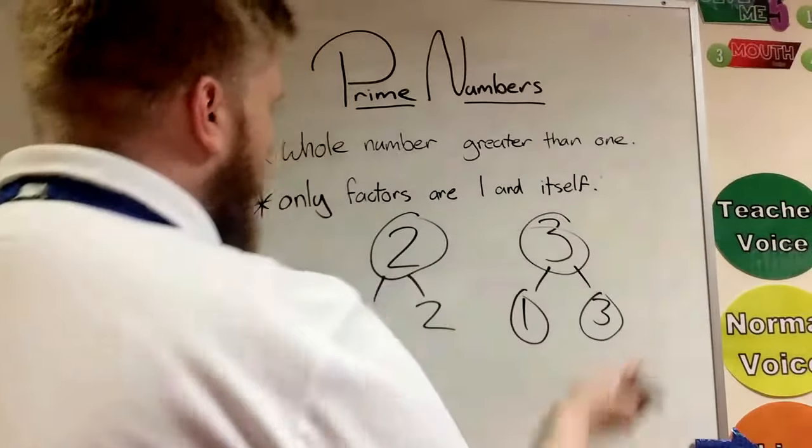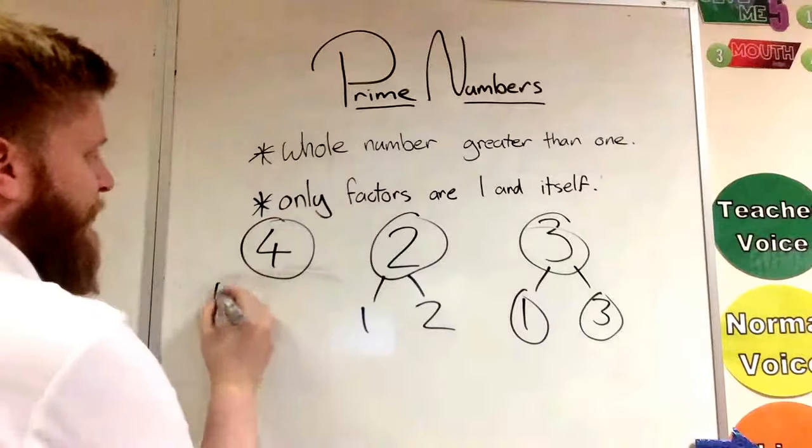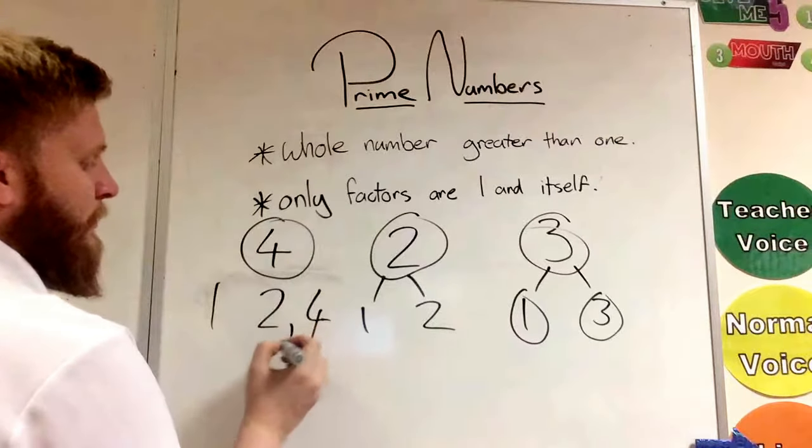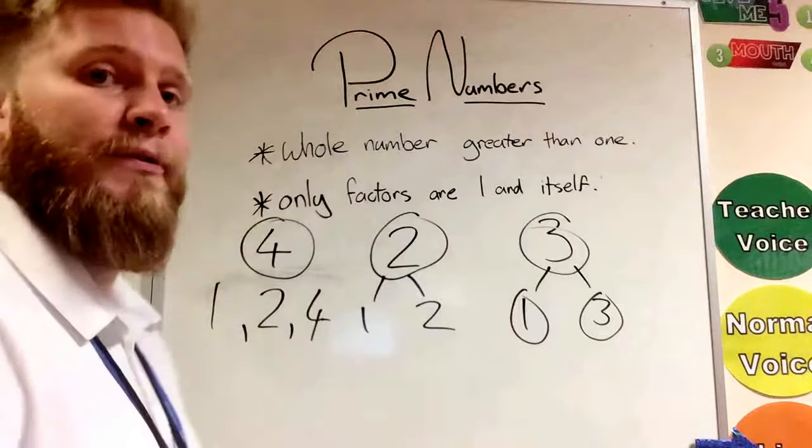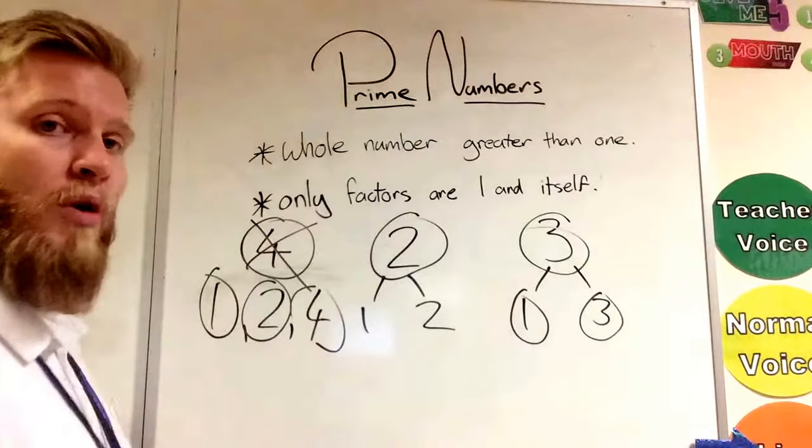Let's go up to 4. So we'll do 4 over here. 4, factors I have as 1 and 4, but we can also do 2 times 2. 2 goes into 4 twice without any remainder. So this is not a prime number.